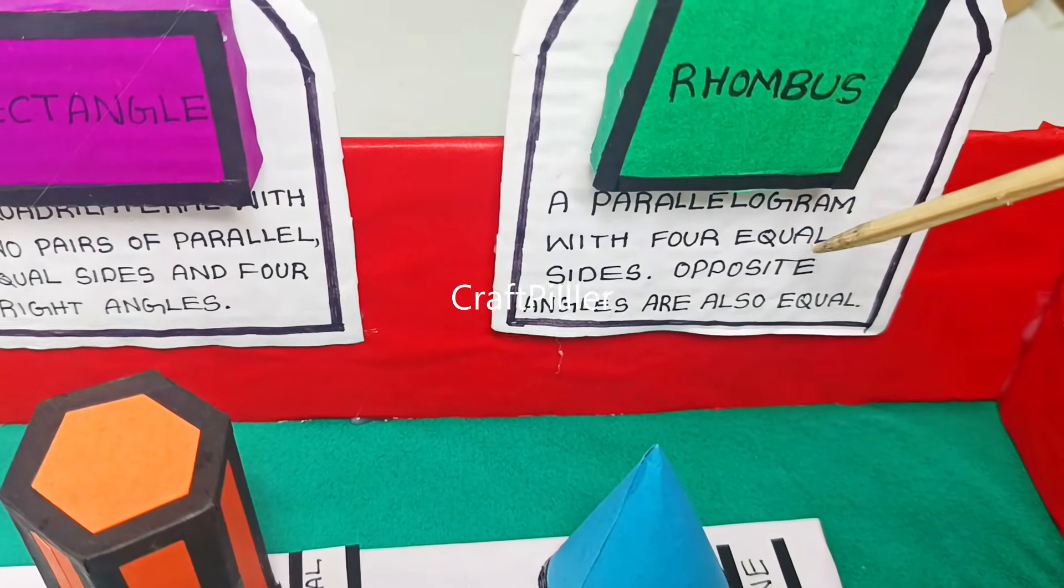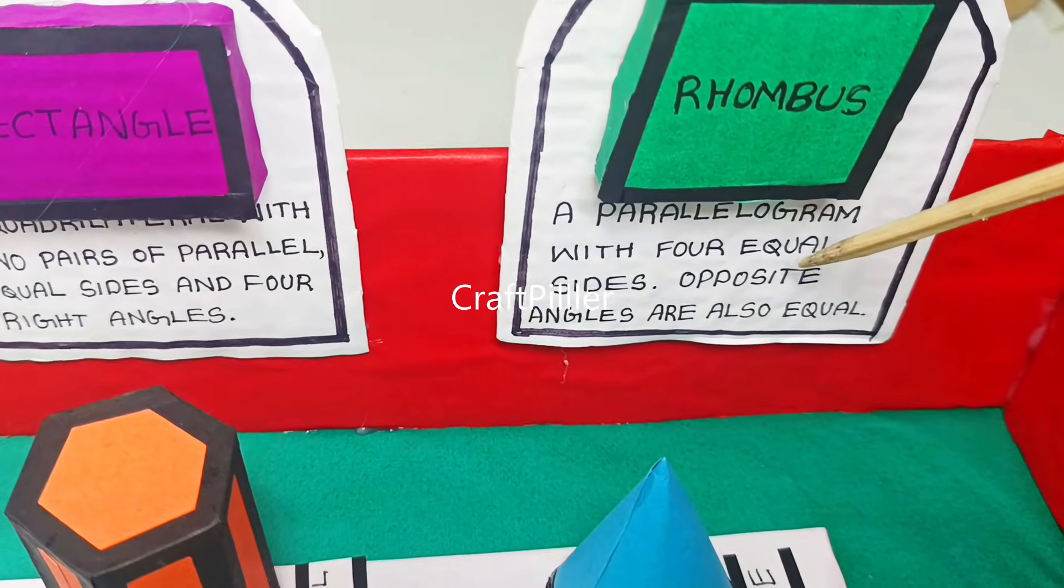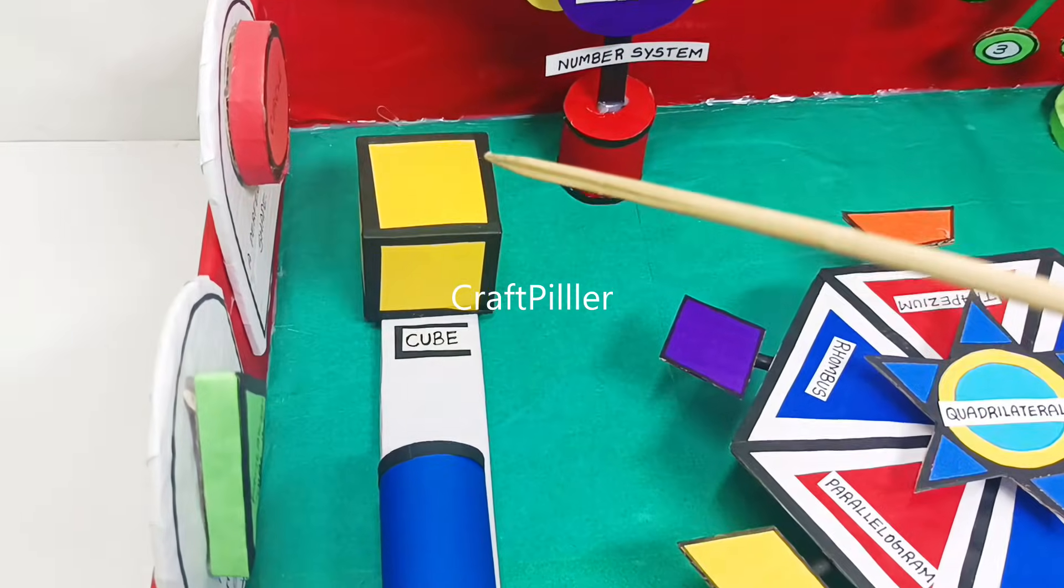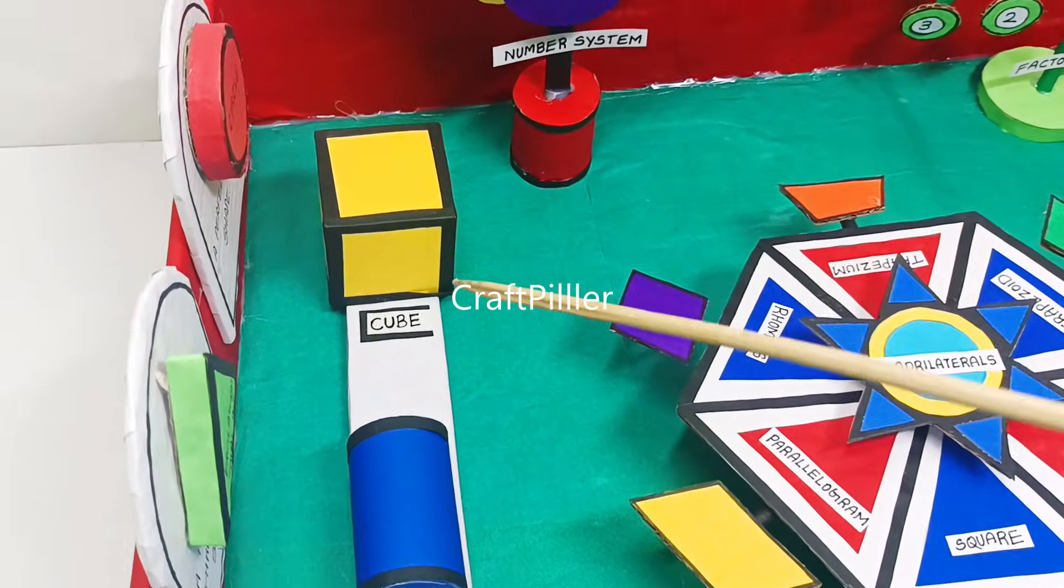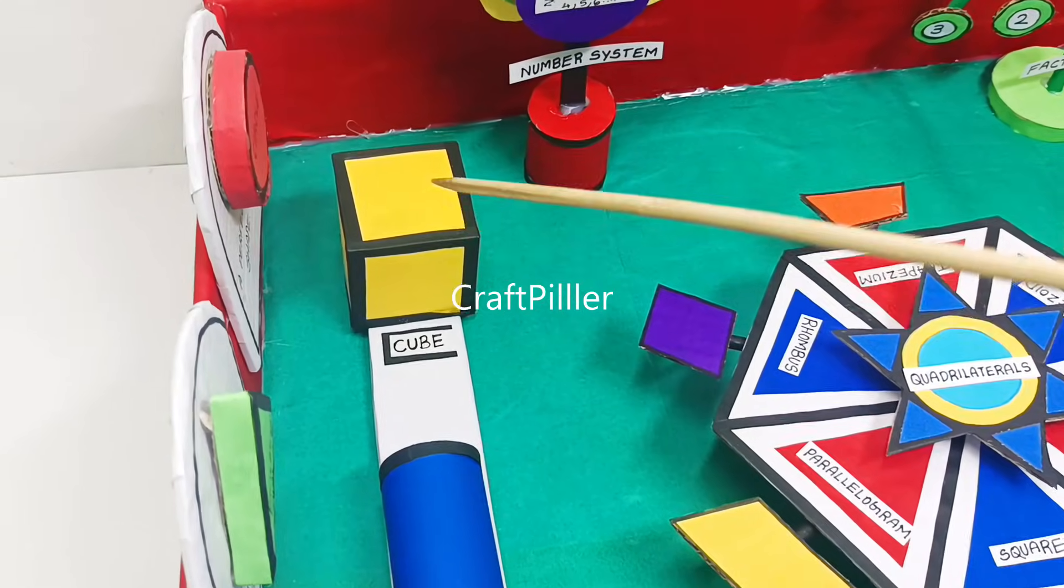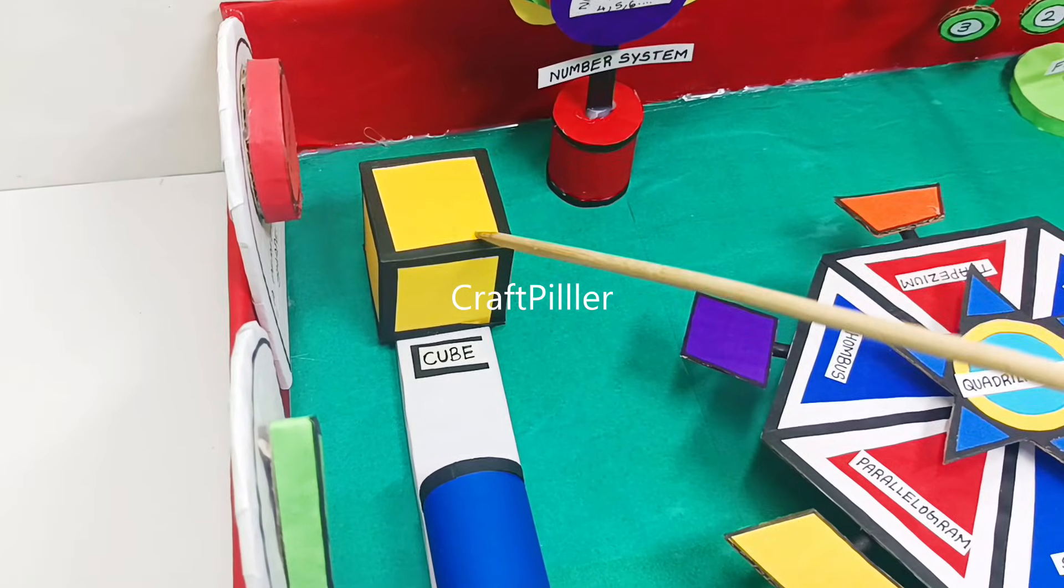Next I will demonstrate 3D shapes. Let me explain what 3D shapes are. The 3D shapes are solid shapes which have length, width, as well as height. So we'll have three parameters in 3D shapes.